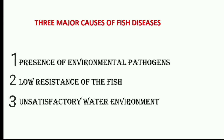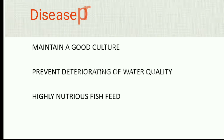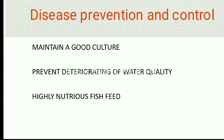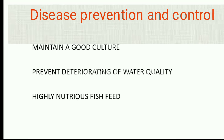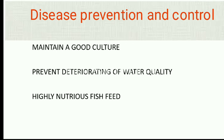There are three major causes of fish diseases: number one, the presence of environmental pathogens; number two, low resistance of the fish stocks; and number three, a bad water environment. We have regular disease prevention and control practices to prevent and control fish disease.